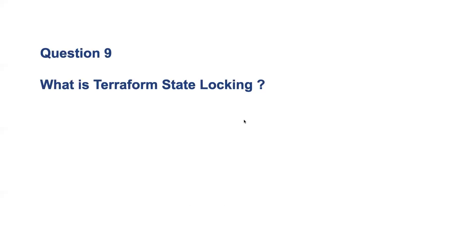Next: what is Terraform state locking? State locking ensures that multiple people cannot run Terraform scripts at the same time, so your cloud provider doesn't receive conflicting instructions. When someone is running Terraform scripts, others must wait until execution is complete. One example in AWS is DynamoDB — you can integrate DynamoDB with an S3 bucket so it keeps a lock and tracks who is running the Terraform scripts.